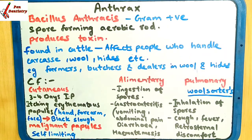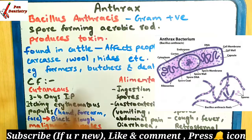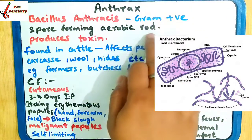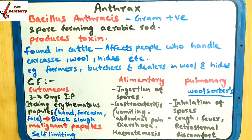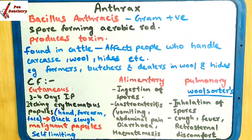Aaj ka topic hai humara anthrax. Anthrax ek aisi disease hai, jo kis ki wajah se hoti hai? Bacillus anthracis ke wajah se. Bacillus anthracis ek gram positive bacteria hai. Spore forming hoti hai, yeh apne khud ke spores banate hai, jo aerobic rods like hoti hai. Inka yeh production hoti hai, jiski wajah se body ke andar toxic produce hoti hai. Yeh capable hoti hai produce karne ke toxicity in the body.